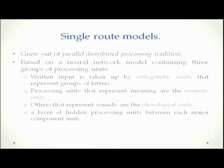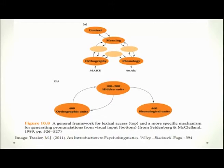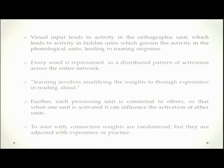Let us look at single route models. These borrow from the parallel distributed processing (PDP) tradition of McClellan and Rumelhart, who say reading happens in just one process. Their neural network-based model has components for orthographic processing (visual analysis), semantic units representing meaning, and phonological components. There is also a hidden layer of units where the actual processing occurs, and context also plays a role — meaning, orthography, and phonology all interact.